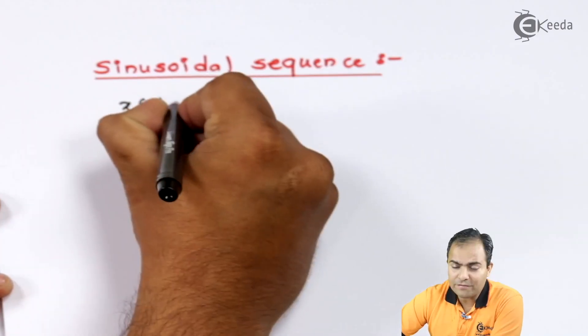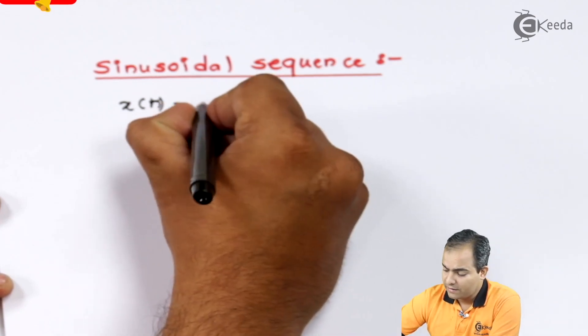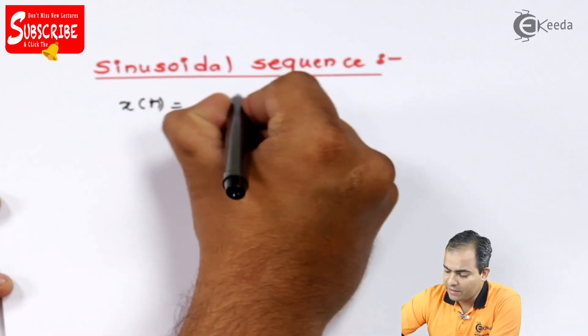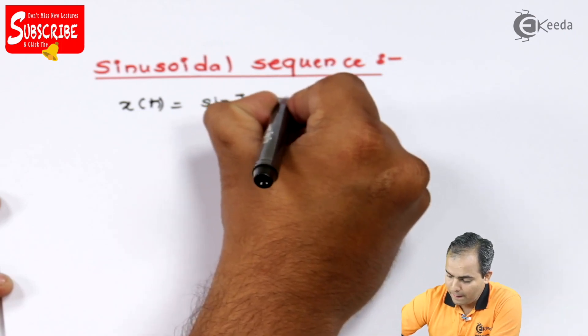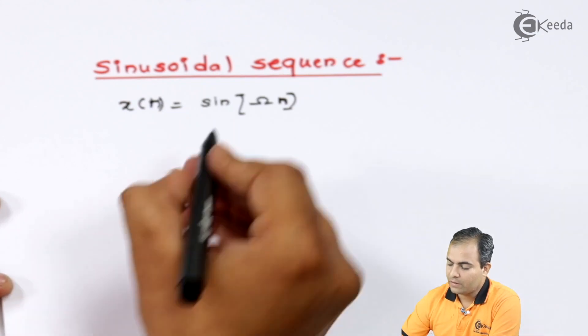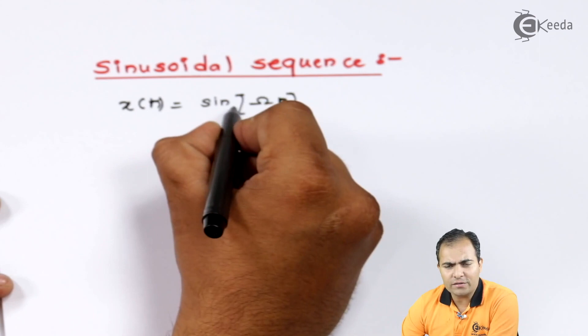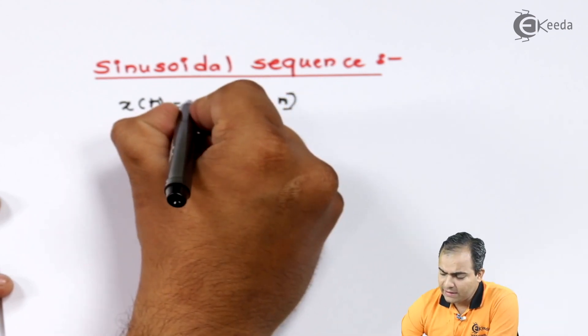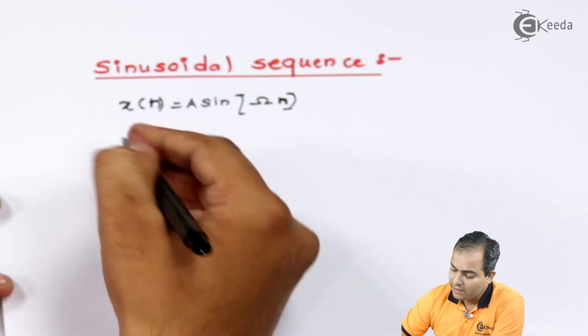Let's say x(t) is the function—sorry, not x(t), x(n) is the function where your sine wave is represented like sine of omega n, where this omega is nothing but the angular frequency. And let's say amplitude of this function is A. Now what happens is